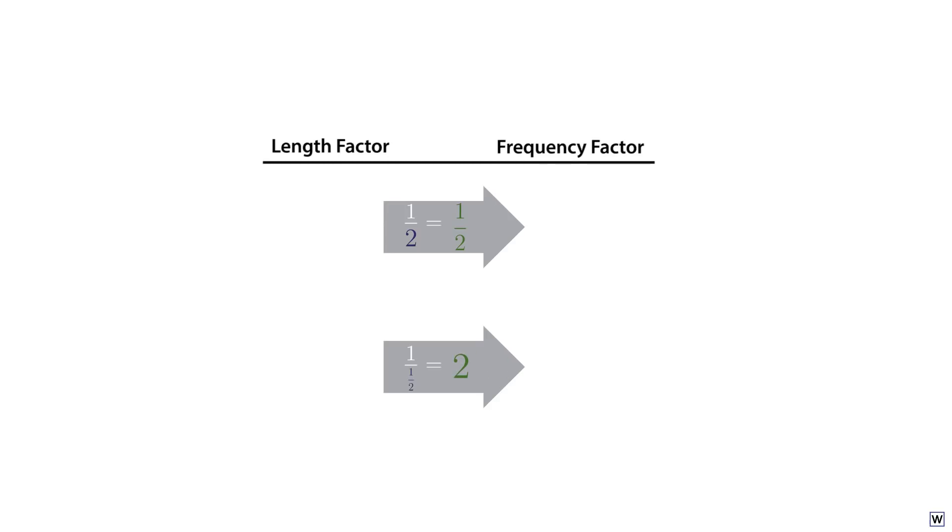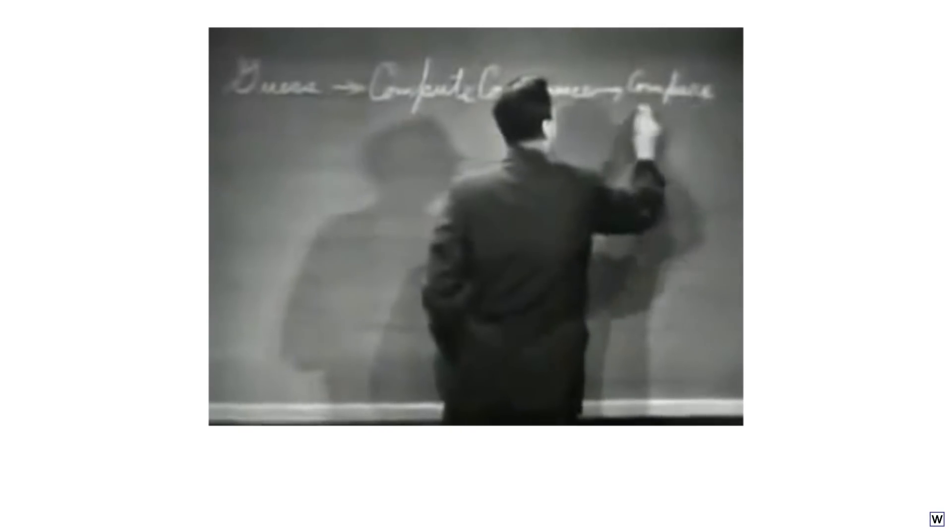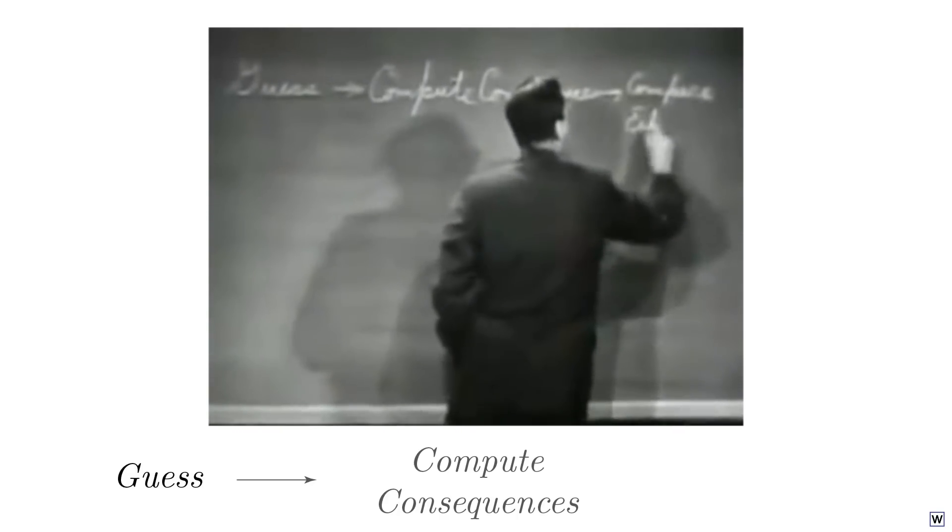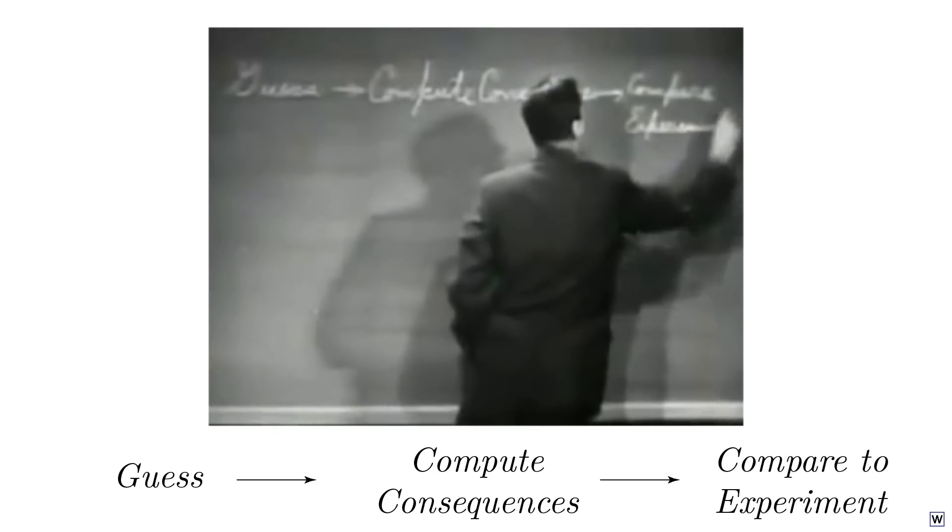Mathematically, we can say that frequency is inversely proportional to length. This was Galileo's guess. Let's see how Galileo's guess holds up to Mersenne's experiments. As Feynman told us, we need to compute the predictions made by our guess before we compare it to experiment.